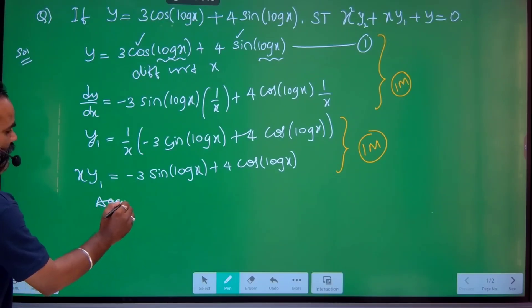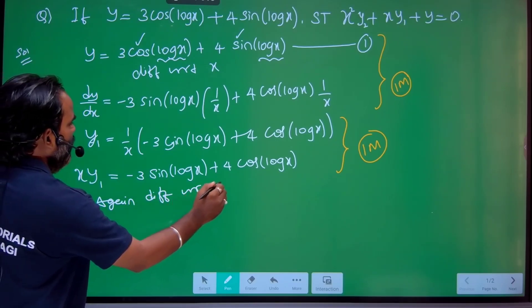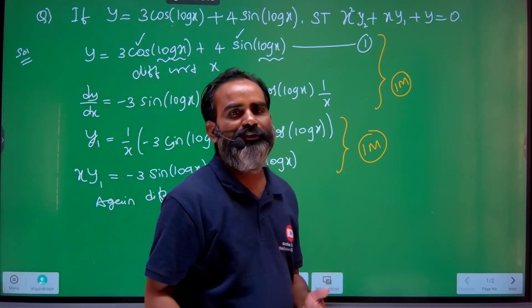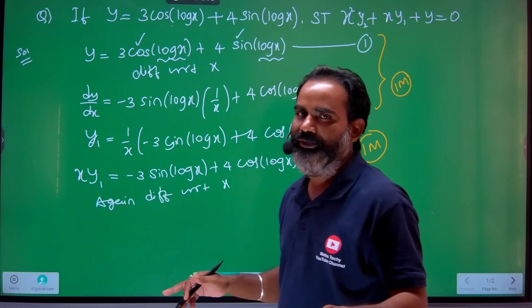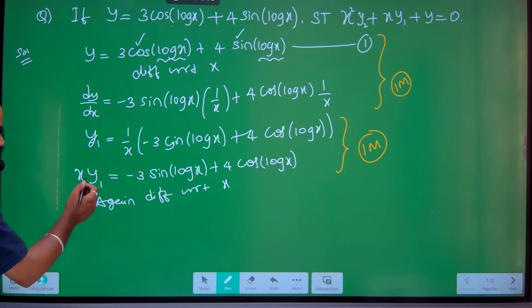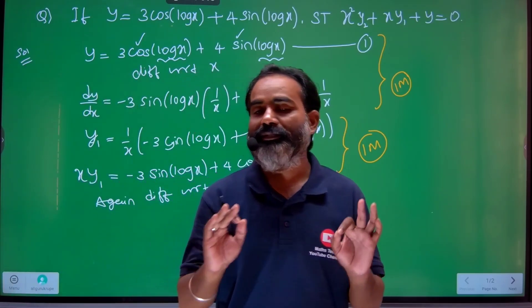Again differentiating with respect to x. Again differentiating this with respect to x. You may lose your marks if you don't show what you are doing to the examiner, to the paper checker. See, xy₁ - we'll apply product rule. Again applying product rule, differentiating with respect to x.